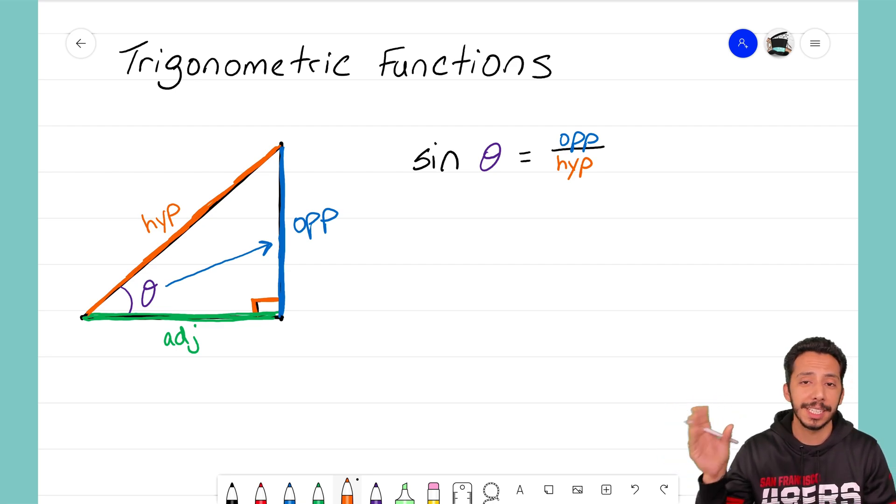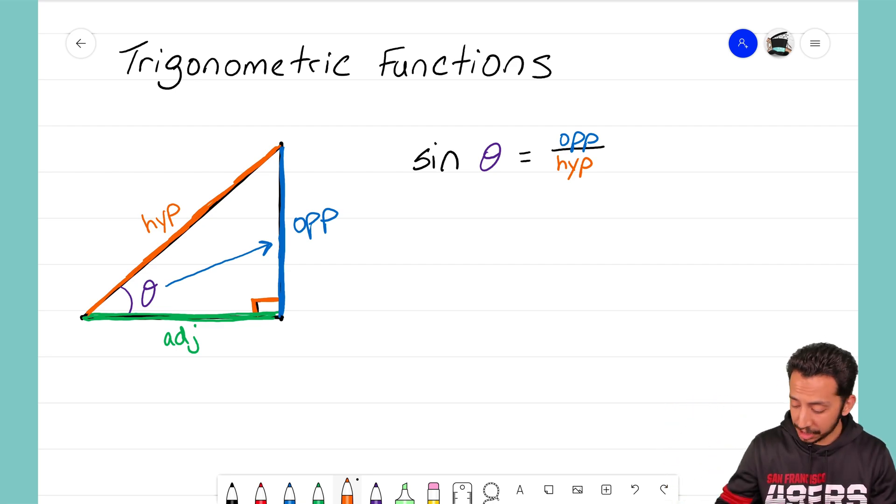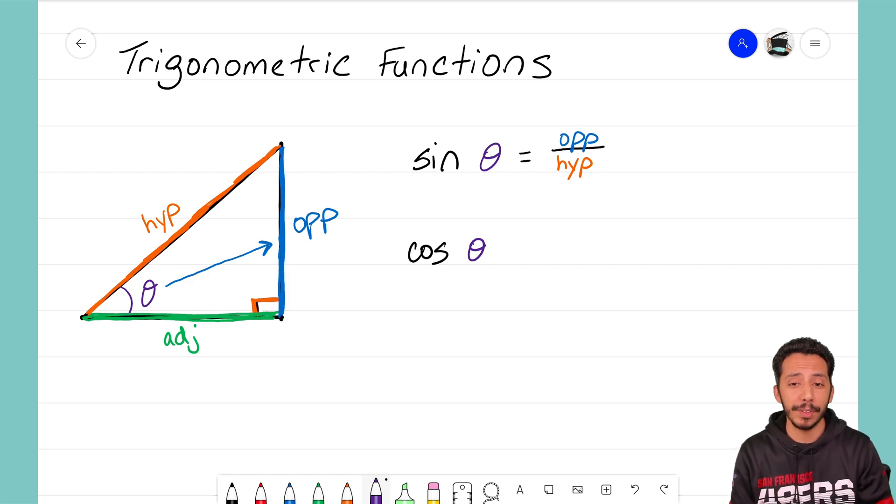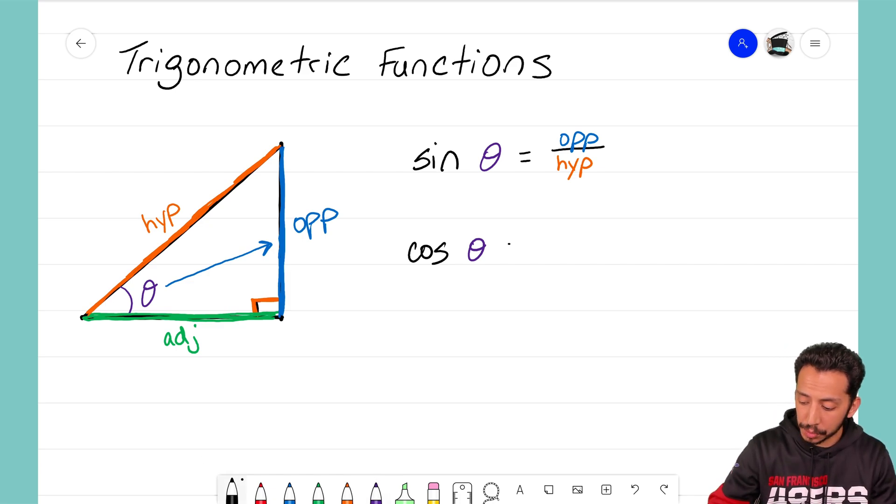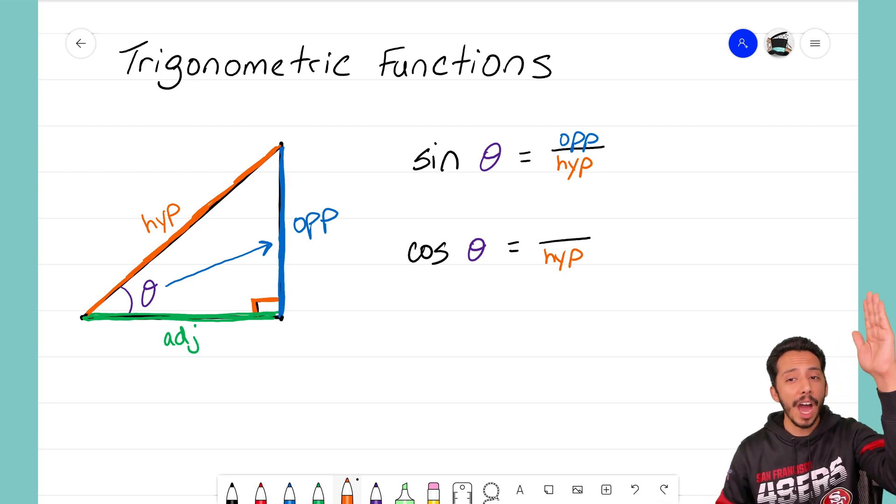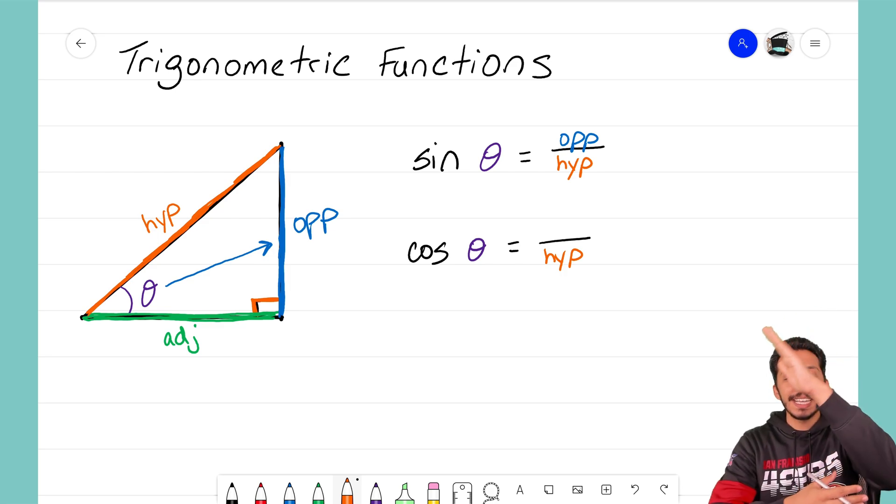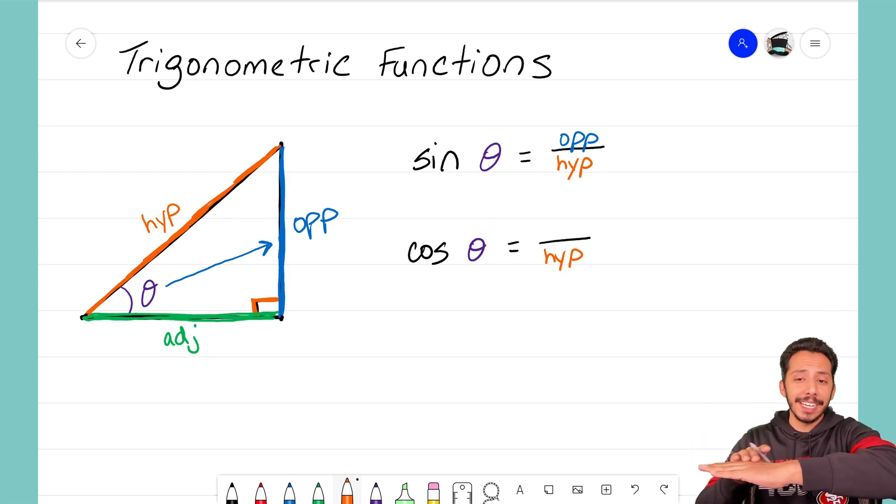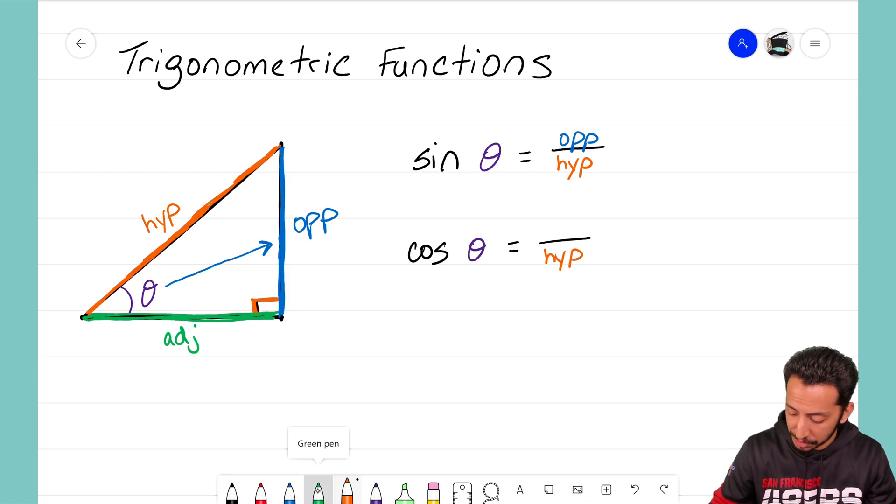The second trig function that we learn is cosine. Again, it'll be cosine of theta, your reference angle, and it's equal to another fraction very similar to sine, where the hypotenuse is your denominator. But what your numerator is, is no longer that opposite side—it is now that adjacent side that is next to your reference angle. So I'm going to go ahead and write adjacent on the top. That is our cosine ratio.